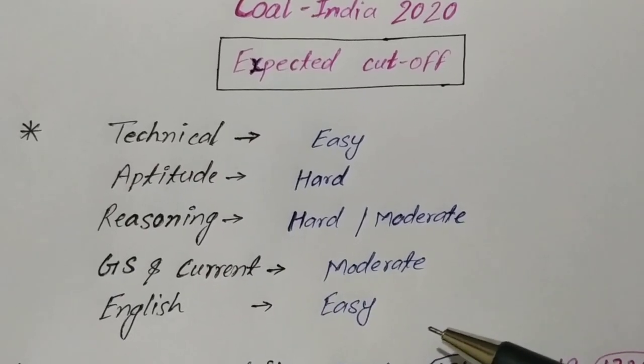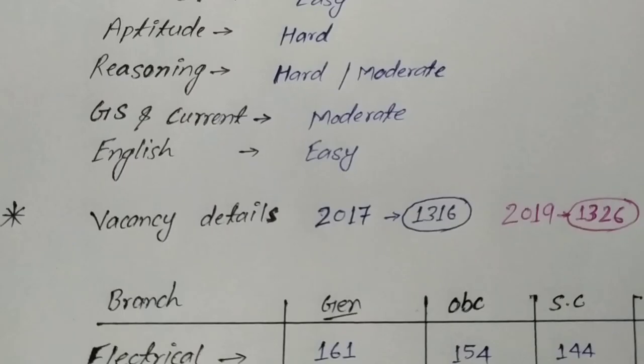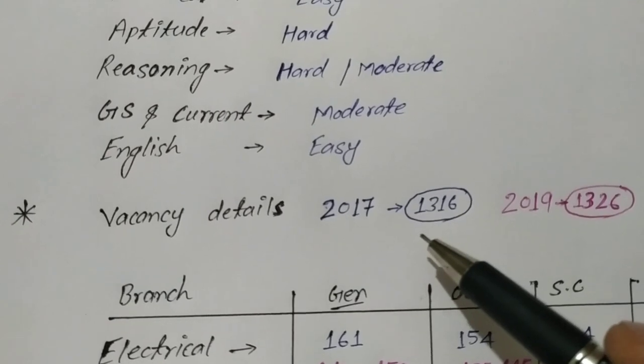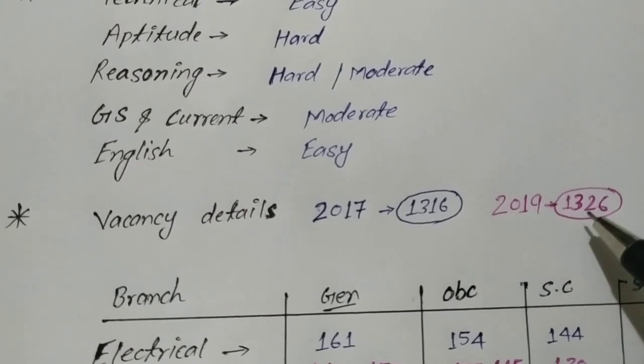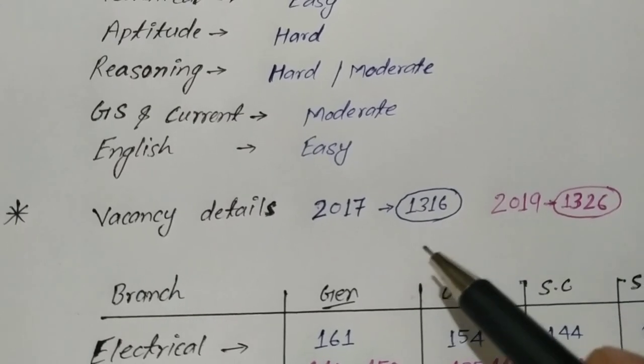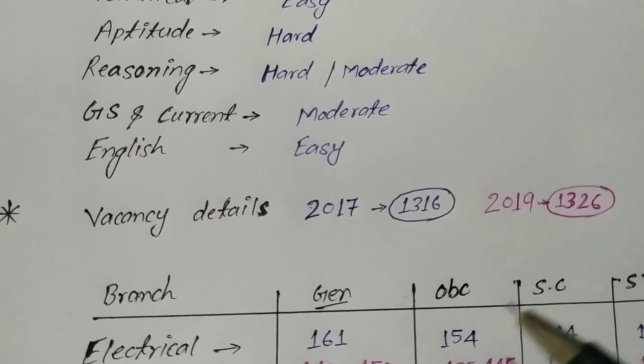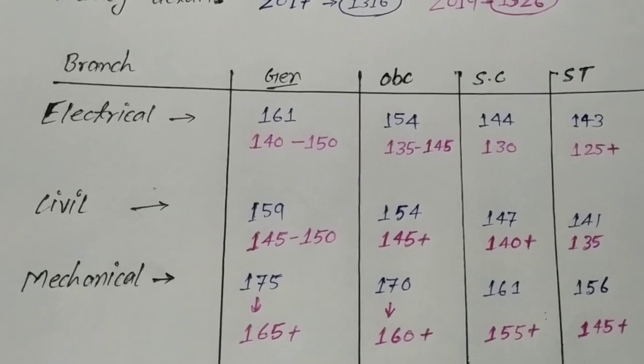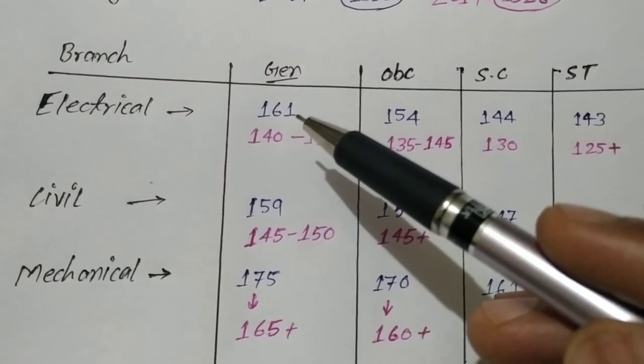I have prepared the expected cut-off. What will be expected cut-off in 2020? In 2017, it was about 1,316 posts. In 2019, it was about 1,326 posts. You can see the vacancy has a little increase. But last time, the competition and number of students were lower. This is the cut-off for electrical branch.